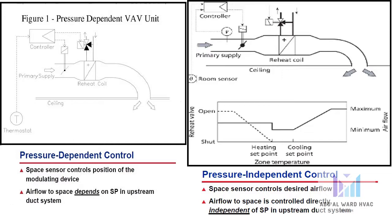In contrast, a pressure independent VAV control scheme directly controls the actual volume of primary air that flows to the space. An airflow measuring device on the terminal unit makes this possible. The position of the modulation device is not directly controlled — it is basically a byproduct of regulating the airflow through the unit. Because the airflow delivered to the space is directly controlled, it is independent of inlet static pressure. Pressure independent control increases the stability of airflow control and allows minimum and maximum airflow settings to become actual airflow values rather than physical positions of the modulation device. It is clearly the most popular form of VAV terminal unit control.